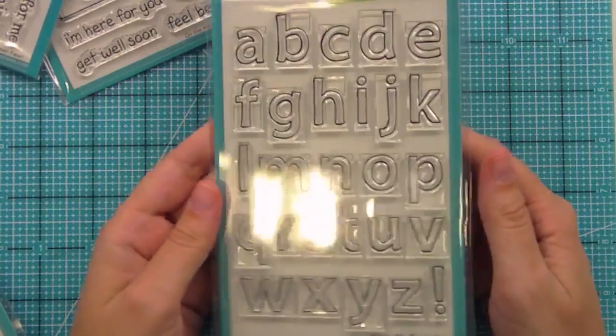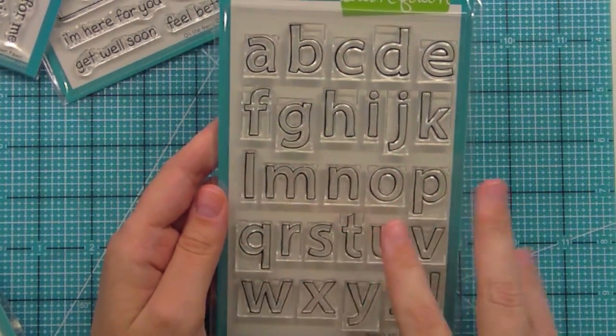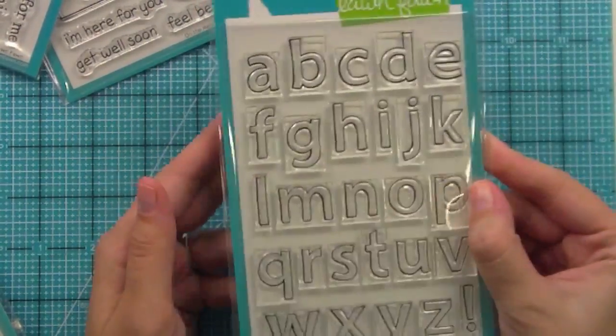We have Quinn's ABCs. This is another one of our ABCs, but large scale. You can color them, paper piece them. They're awesome, so much fun. It's just so cool to have big letters. I love it.